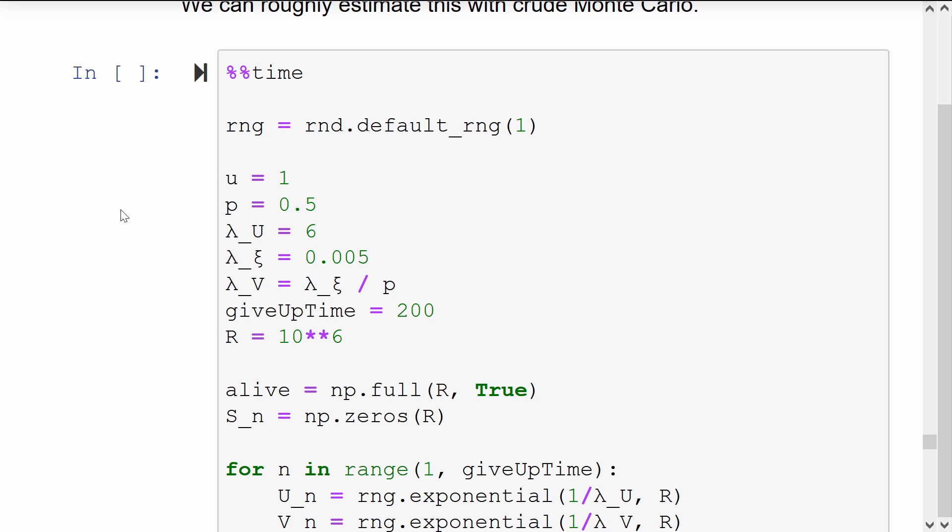Before we declare that any scenario which has not hit bankruptcy will never hit bankruptcy. Capital R is the number of replications to simulate. We'll create a vector of alive which tracks each of the R replications to see whether they have not hit ruin yet, and S_n will be the running sum for each of the replications.